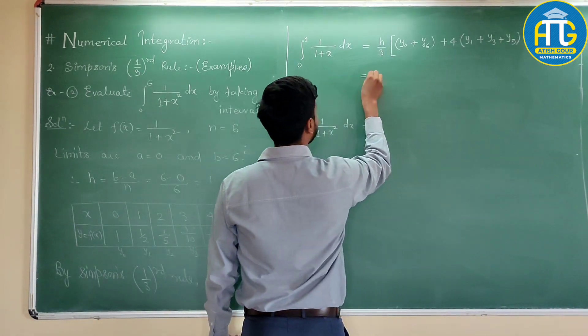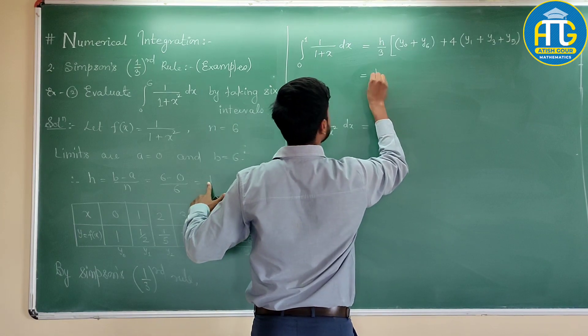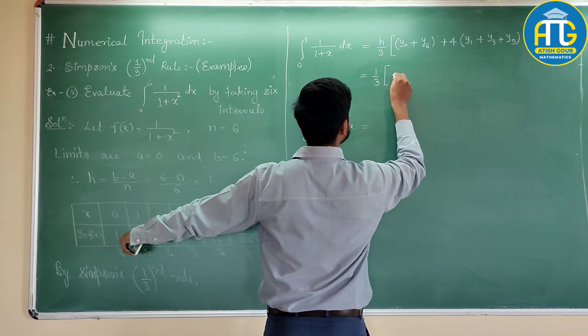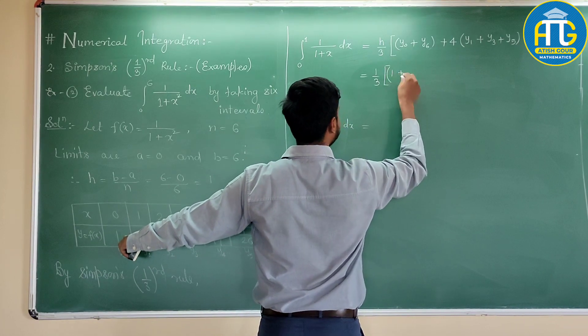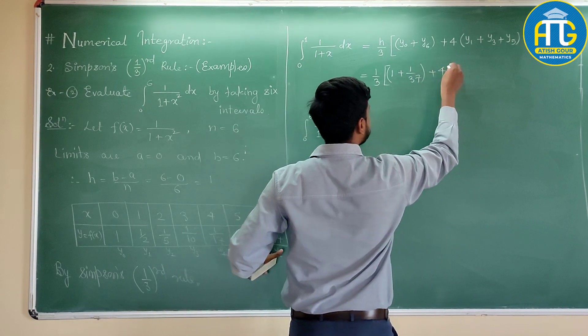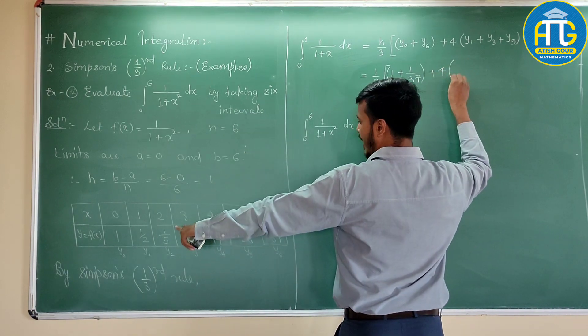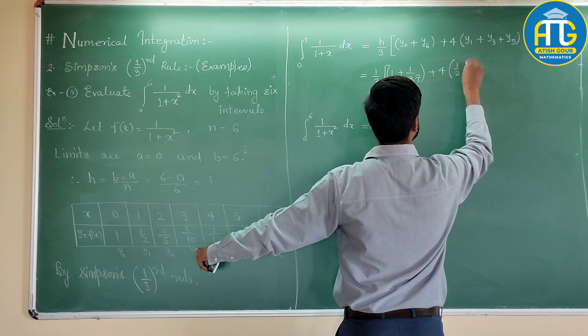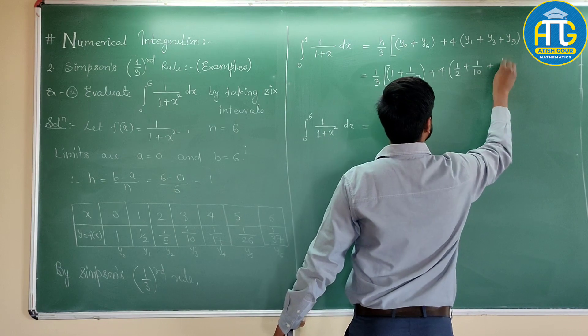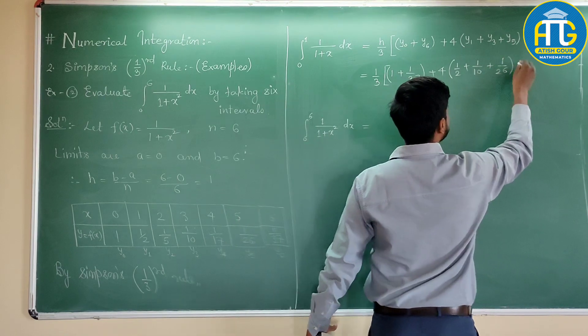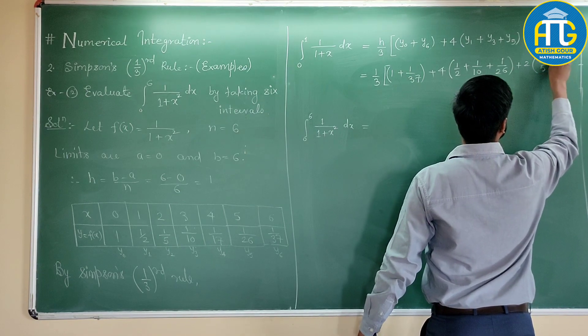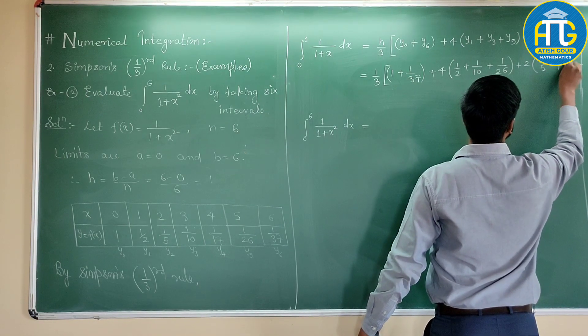Now you have all these values. Let us substitute it. h is 1, so this is 1 by 3. What is y0? y0 is 1 plus what is y6? 1 by 37 plus 4 times what is y1? y1 is 1 by 2, then y3 is 1 by 10 plus 1 by 26 plus 2 times y2, 1 by 5, plus y4, 1 by 17.